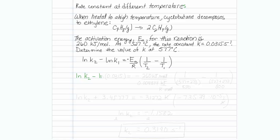We are going to subtract natural log of k1, which is 0.0315, and that is going to be equal to negative activation energy — that's 260 kilojoules per mole — divided by R. We are dealing with energy units, so let's use R = 0.008314 kilojoules per kelvin mole.